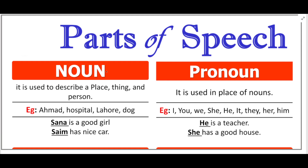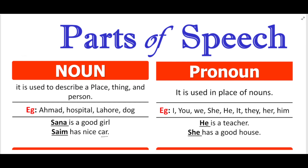The name of anything — that is what noun is. For example, what we have to say is noun. She is a good girl — here 'girl' is a noun, the name of a person.